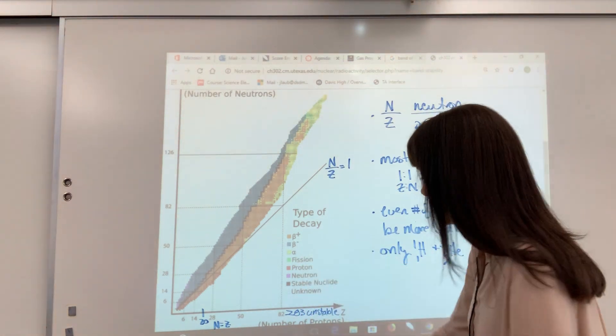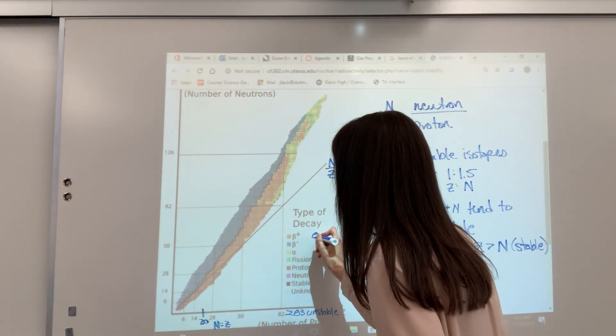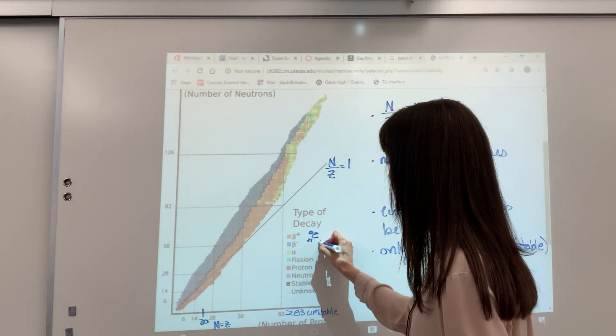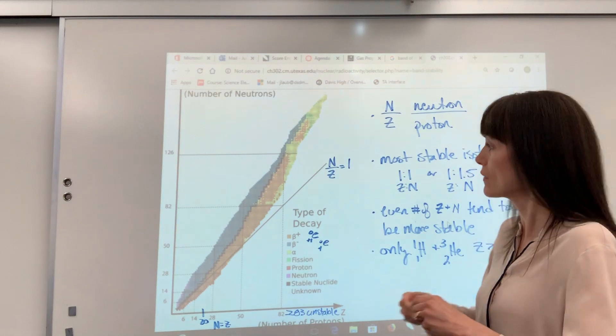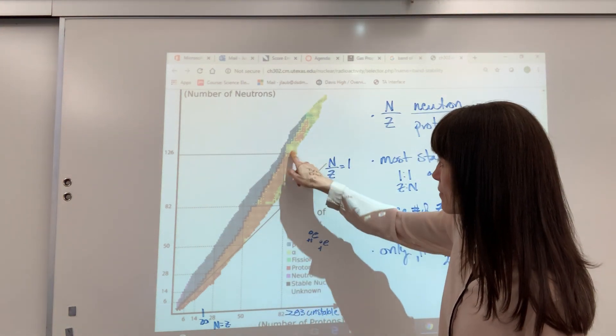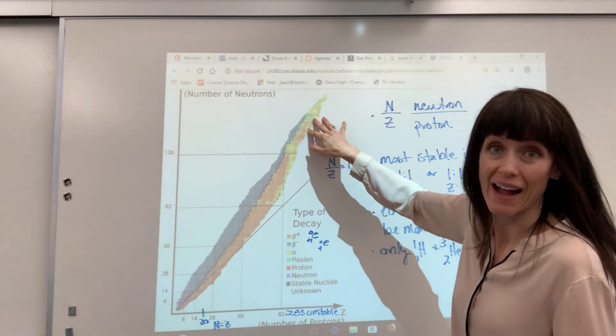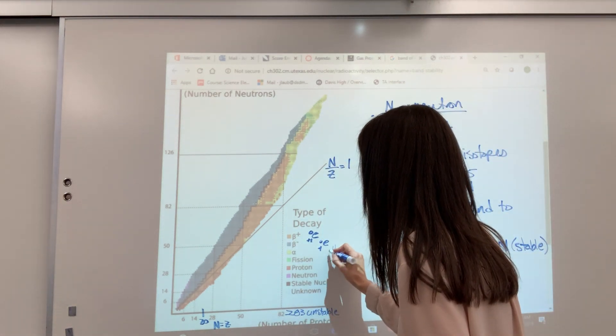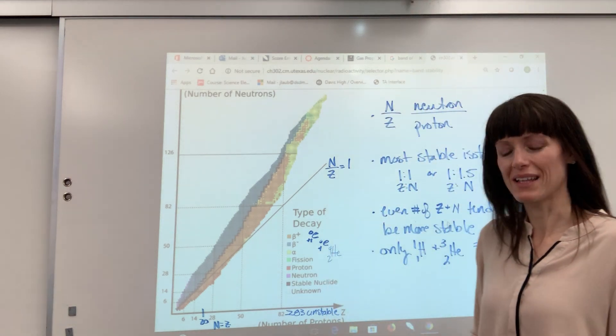So that would be, as a reminder, your positron, remember that's your E with a plus 1 and a 0. And the beta is the E with the minus 1 and the 0. Now, it's going to be, as we get close to 82, above 82, that's where we start to have our alpha decay. And you'll recall that the alpha decay is just a helium, which is going to be our helium atom.